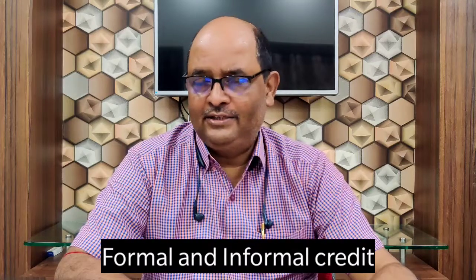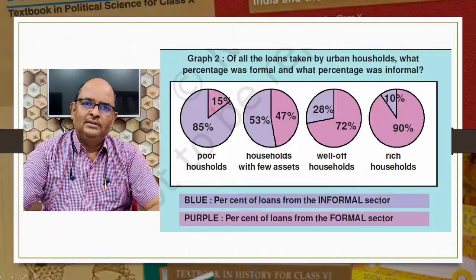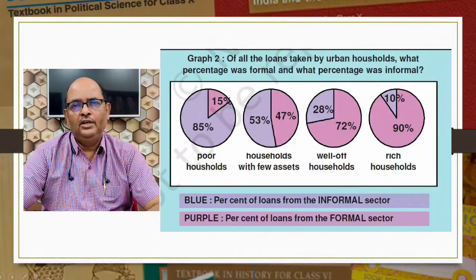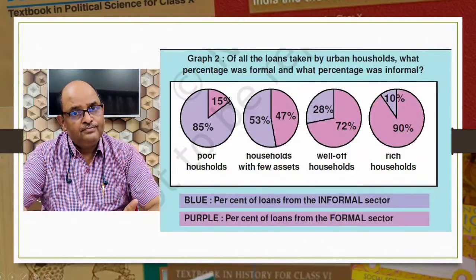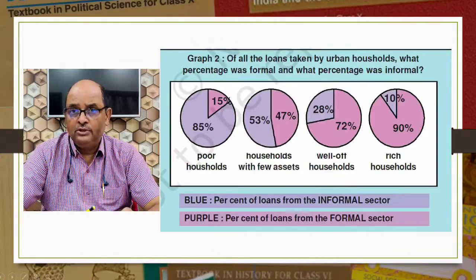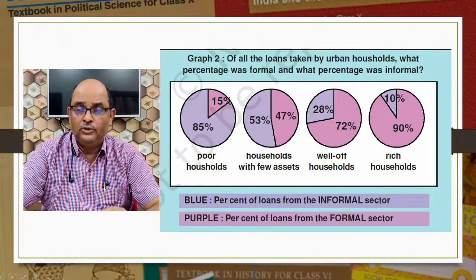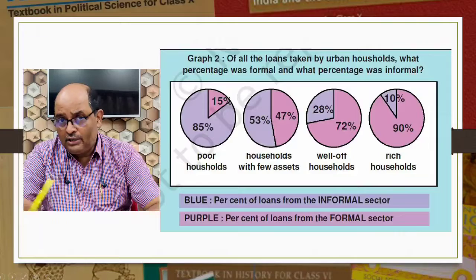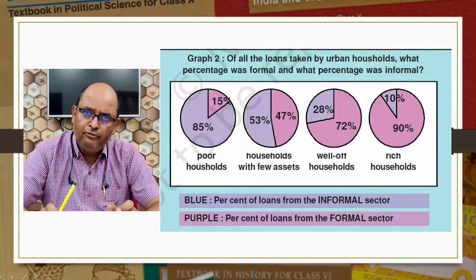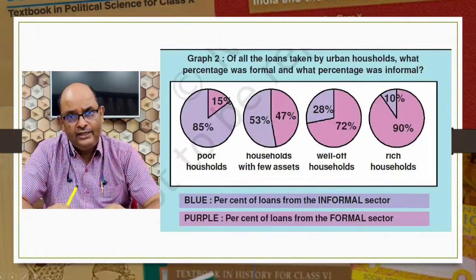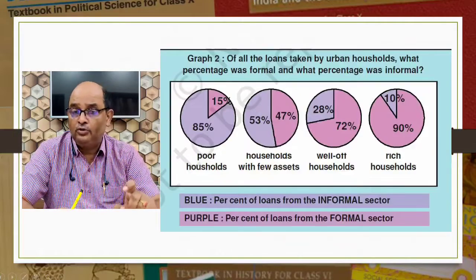Now let us see Graph 2, which shows the importance of formal and informal sources of credit in urban areas. People are divided into four groups from poor to rich. The blue color shows percentage of loans from the informal sector, and purple shows percentage from the formal sector. You can see that 85% of loans taken by poor households in urban areas are from informal sources. As you move to richer groups: 53% for households with fewer assets, 28% for well-off households, and only 10% for rich households.